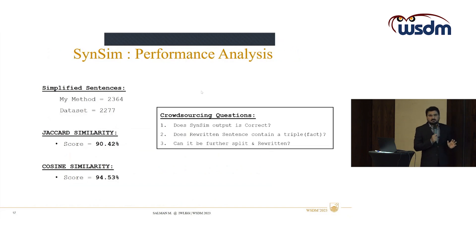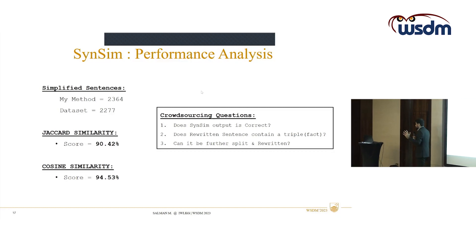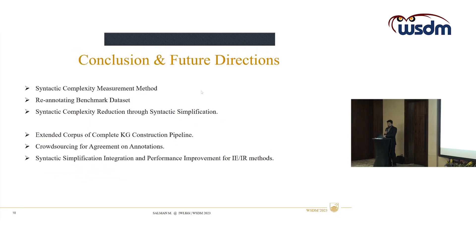To validate the simplification task, we need to crowdsource the dataset to further publish it as a resource. We are planning crowdsourcing questions in which we will invite people to label whether the output is correct — specifically, does the rewritten sentence contain a triple, since we require at least one fact per sentence for use in knowledge graph construction, and can it be further split and rewritten? Based on that, we will establish agreement on the dataset and release it as a resource.